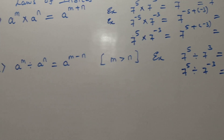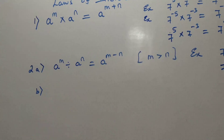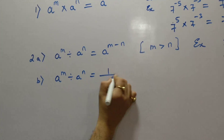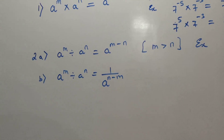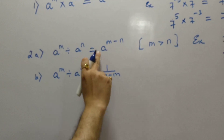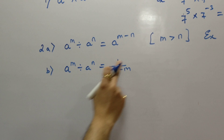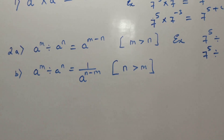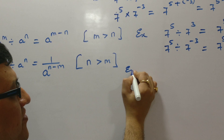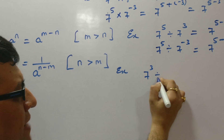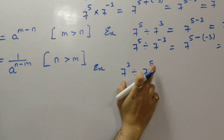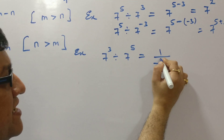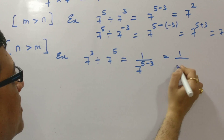Law 2B says: A raised to M divided by A raised to N, answer shall be 1 upon A raised to N minus M. The condition here is N should be greater than M. For example, 7 raised to 3 divided by 7 raised to 5 — here 3 is M and 5 is N. Is N greater than M? Yes. The answer shall be 1 upon 7 raised to 5 minus 3, which is 1 upon 7 raised to 2.